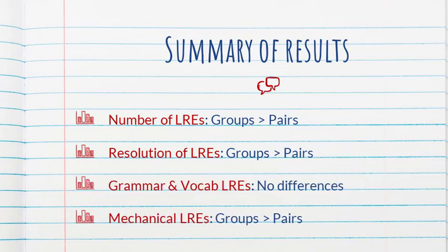And in terms of what were they discussing, everybody, both groups and pairs, discussed grammar and vocab at about the same rate. And with respect to mechanics, a little more in the groups than in pairs, but overall they were fairly infrequent.